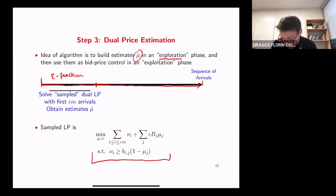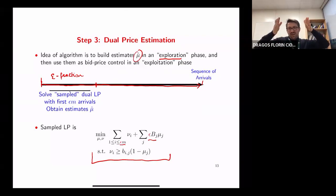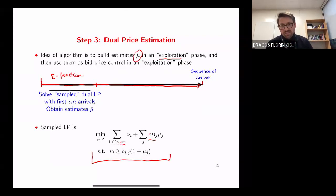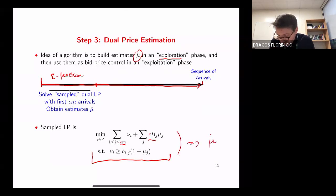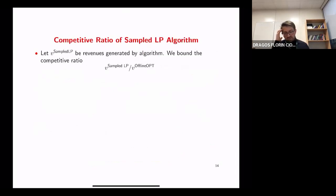The algorithm creates a sampled version of the offline LP using just the first epsilon-times-M queries. This sample dual LP is the same as the full dual except it only considers the first epsilon*M queries and appropriately scales down the budget to reflect the shorter time horizon. Solving this gives a mu-hat estimate, which is then used as bid price controls for the remaining queries. This is a sample LP approach.